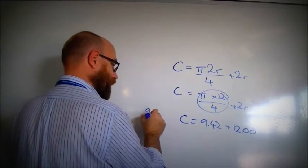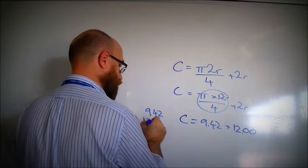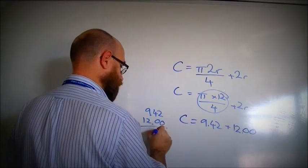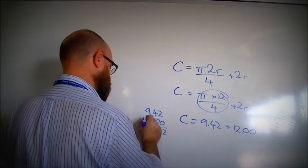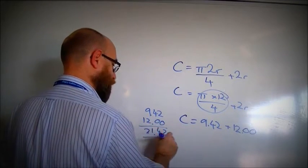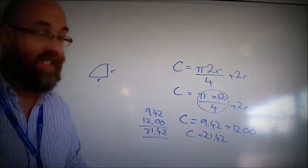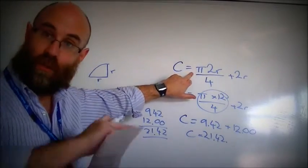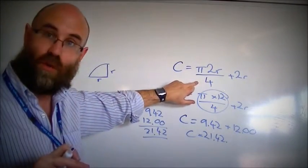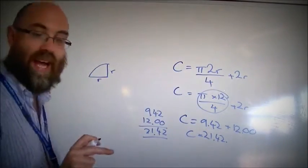Again, I'm going to go over to the side, and I'm going to add 9.42 to 12, and that gives me 21.42. So my circumference is 21.42. I did that using the curve, but I only kept a quarter of it, plus the two r bits.